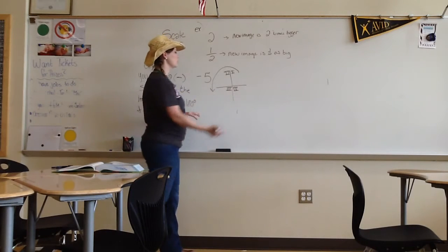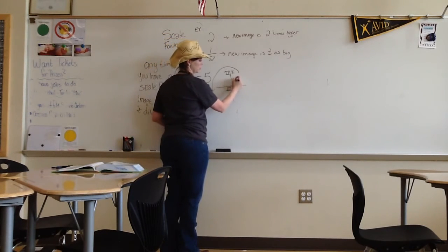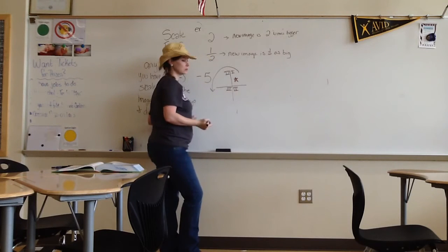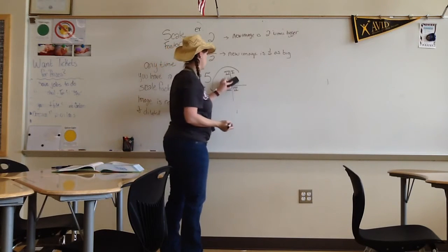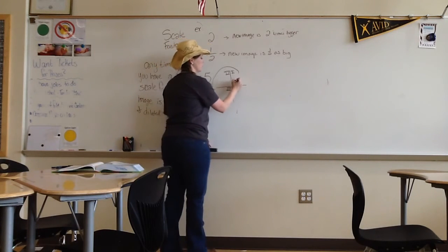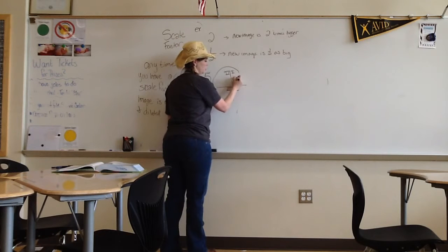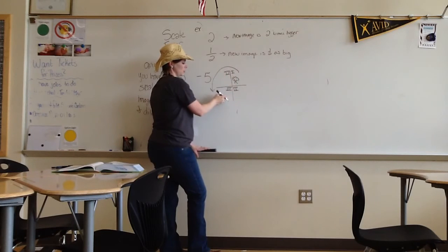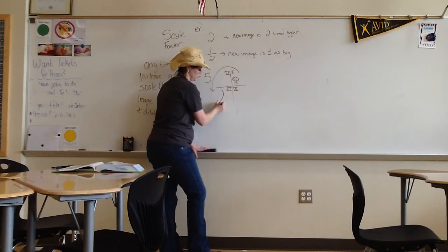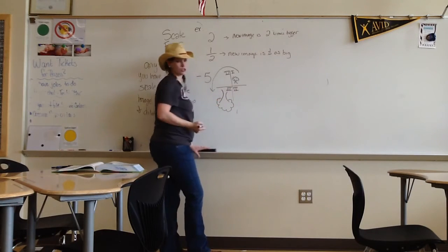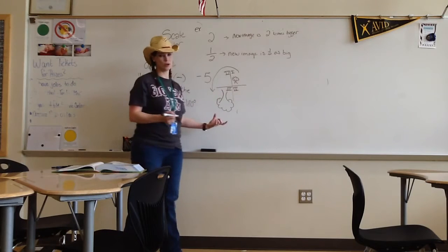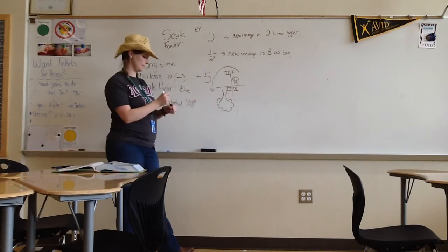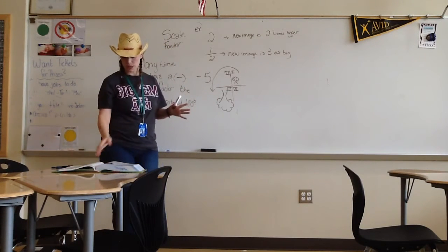So if your original image were right here, let's draw a tree. Say that was your first image. Your new image is going to be rotated 180 degrees and five times bigger. So it looks something like that, a whole lot bigger, and now upside down.